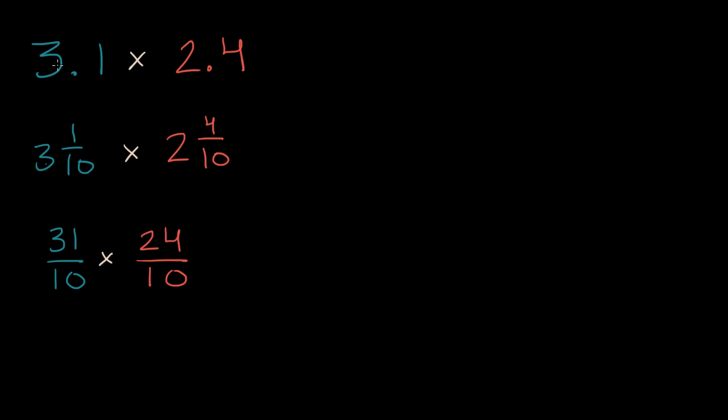And hopefully this makes sense too, that 3.1, this three right over here, this is 30-tenths, or let me write 30-tenths, and then this is one-tenth. So this total is going to be 31-tenths. Likewise, this two is 20-tenths plus four-tenths gives us 24-tenths. And now we can multiply.